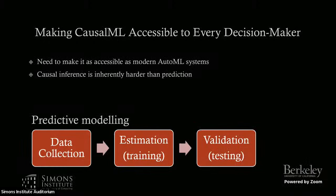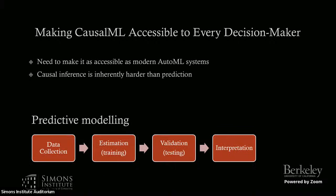A big hurdle is that most of these causal machine learning technologies focus particularly on the estimation or inference part of the causal inference pipeline. But unlike predictive modeling, if we want to make causal inference accessible to any decision maker, there are so many other components to the causal inference pipeline that we also need to automate. When doing predictive modeling, there are basically three steps: you collect your data, you do some estimation and training, and then you keep some out-of-sample validation. Maybe now you also have an interpretability component at the end to understand what the model learned to predict.